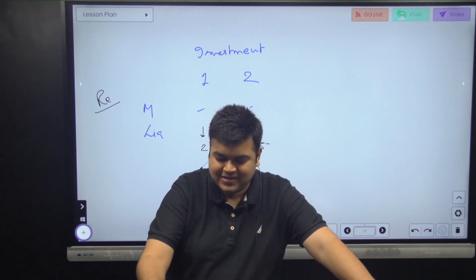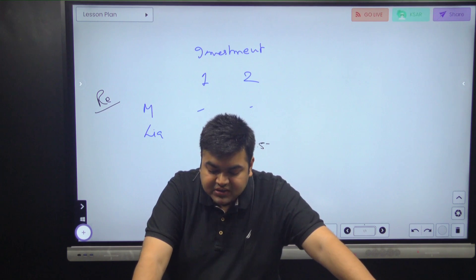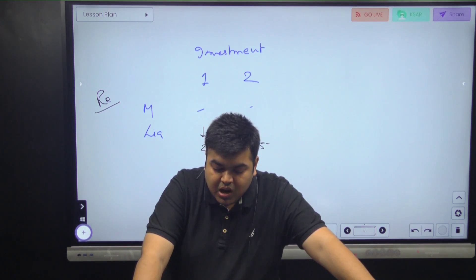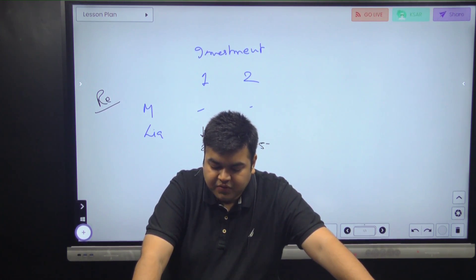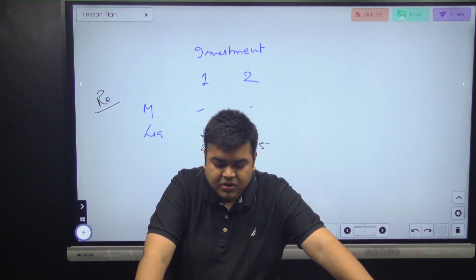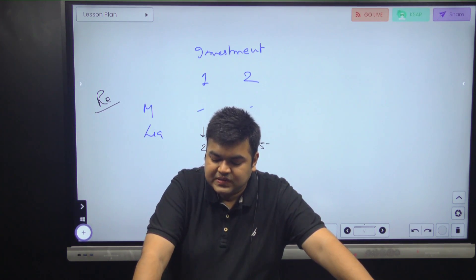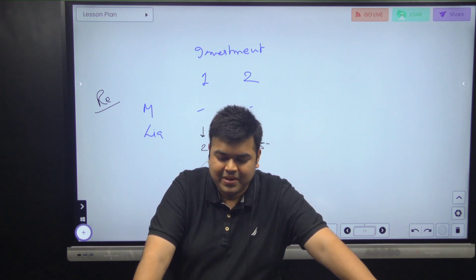Next, estimate the default risk premium. To estimate the default risk premium, I have to look at a combination. I need to look at the last two investments — investments four and five — because those two have a high and low default risk. The default risk for investments one, two, three, and four are the same, so I cannot make any comparison there.